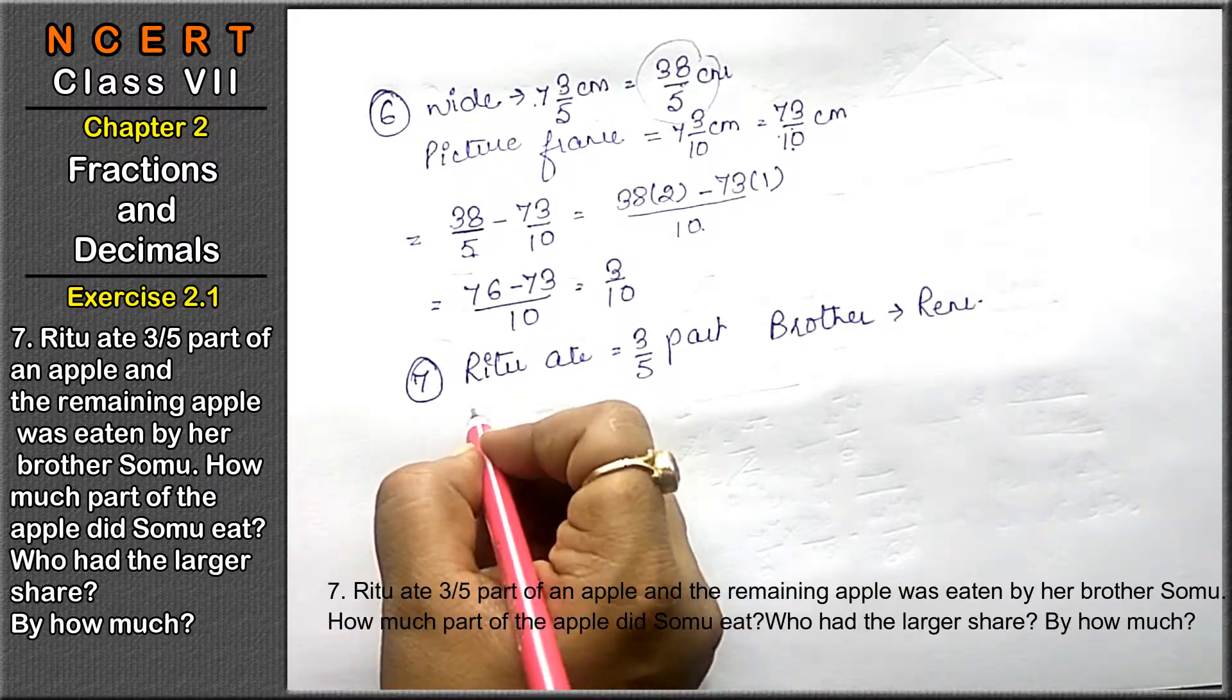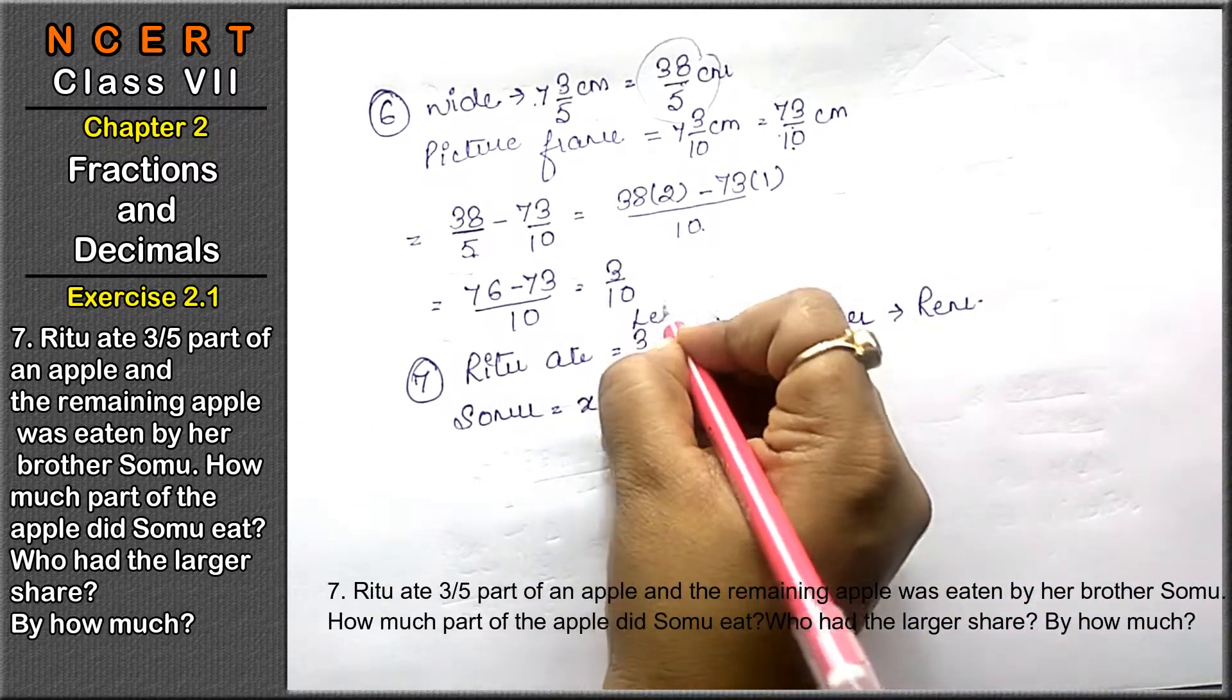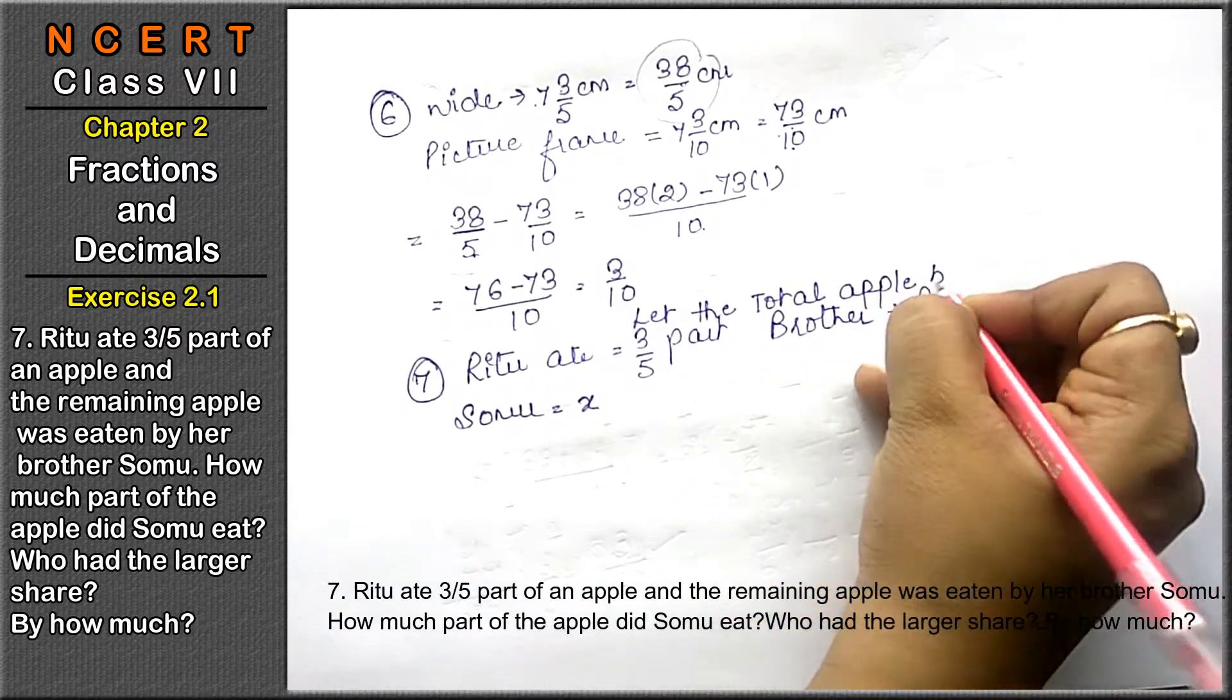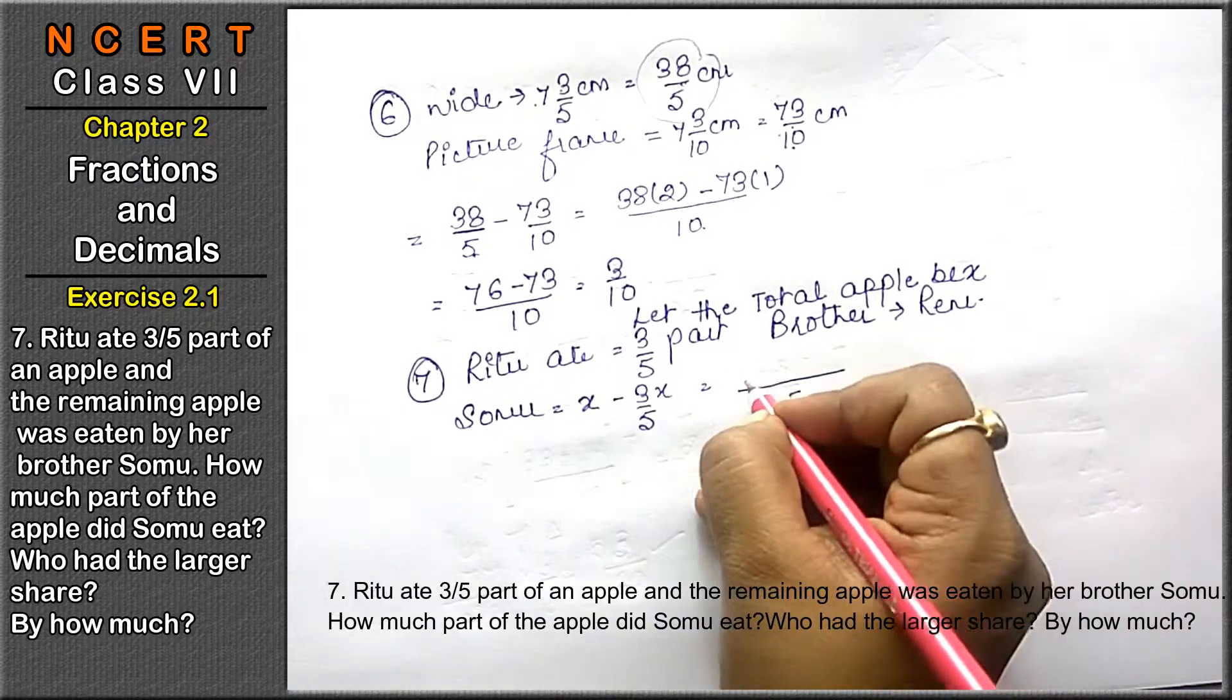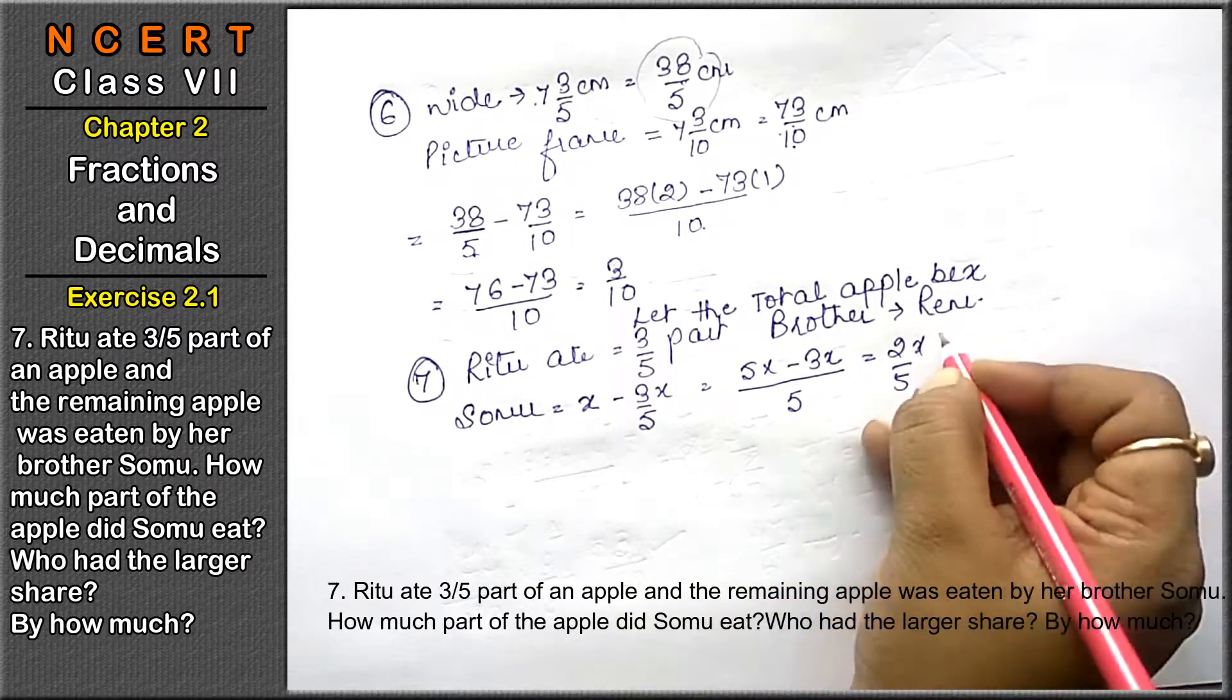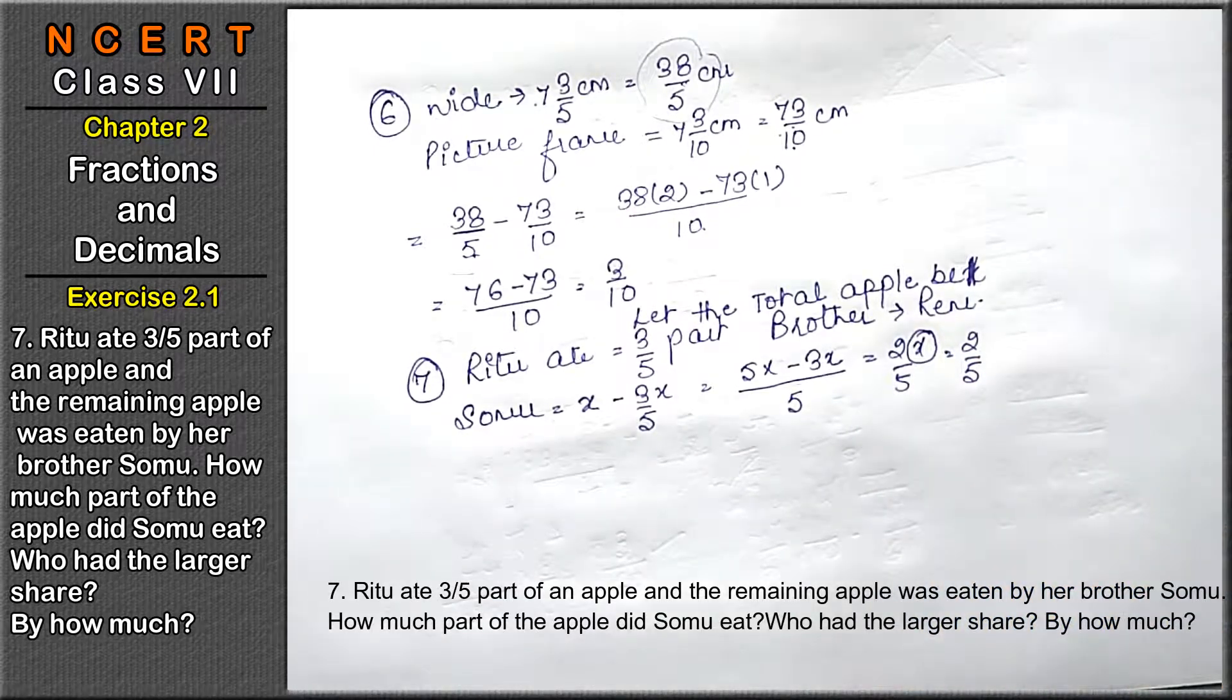Brother's name is Somu. So how much apple did Somu eat? Let the total apple be X. X minus 3/5 part. The LCM is 5, so 5X minus 3X upon 5, that is 2X upon 5. Here we can take X as 1, so 2/5 part his brother ate, because one part minus 3/5 part equals 2/5 part his brother ate.